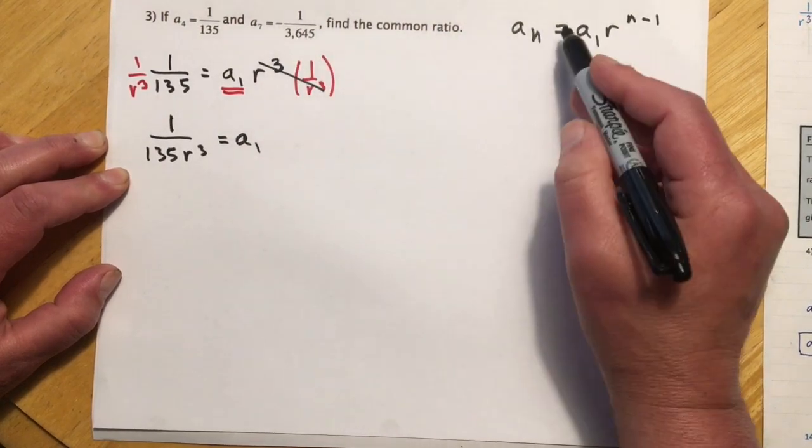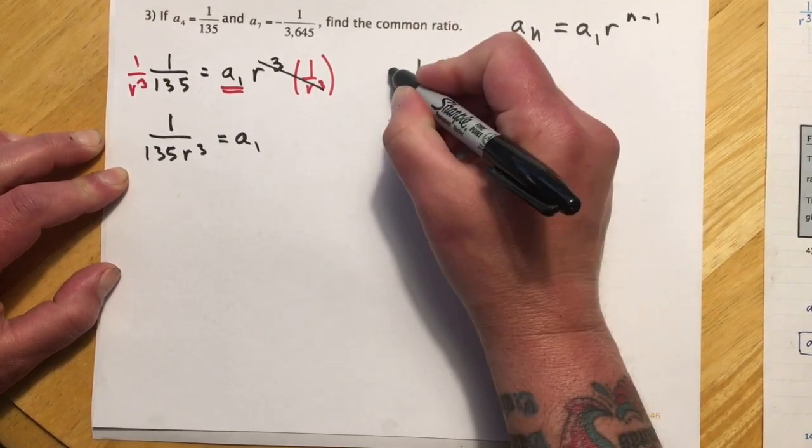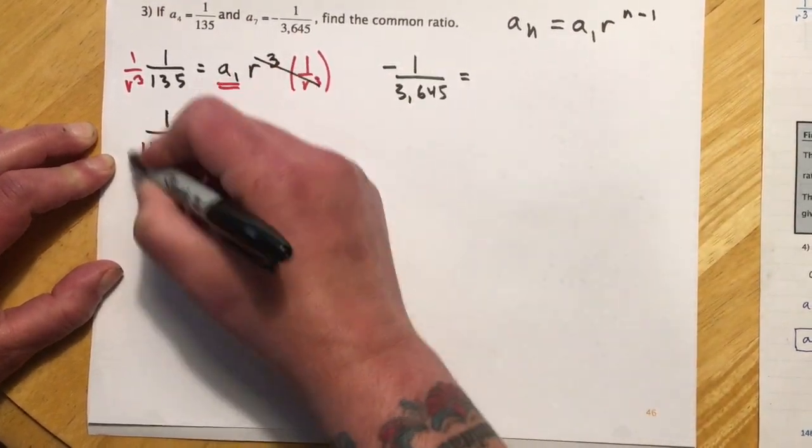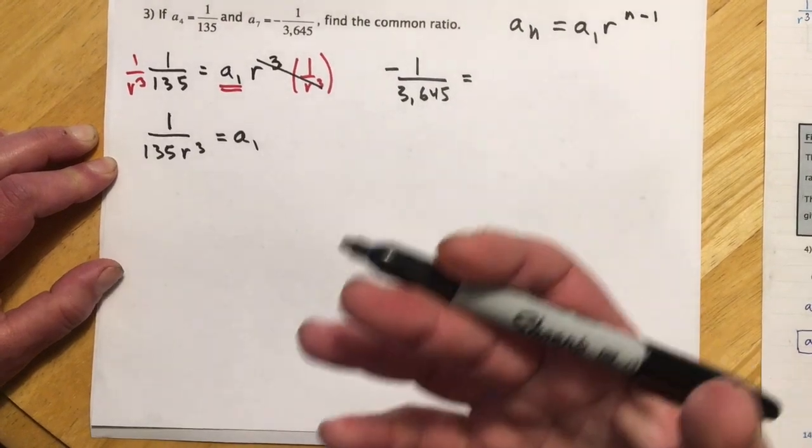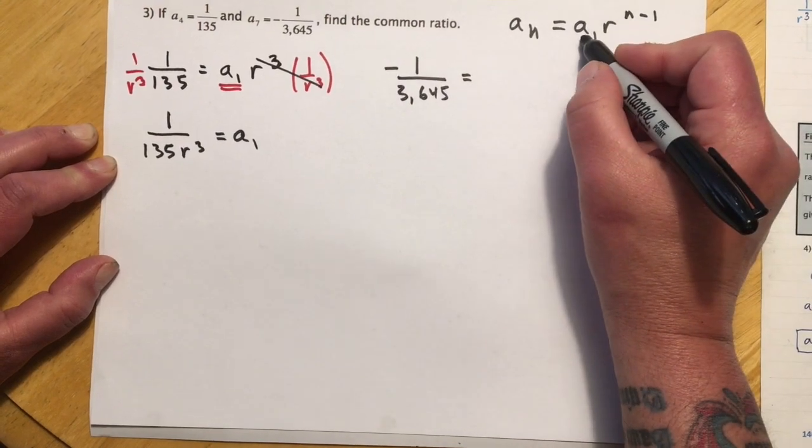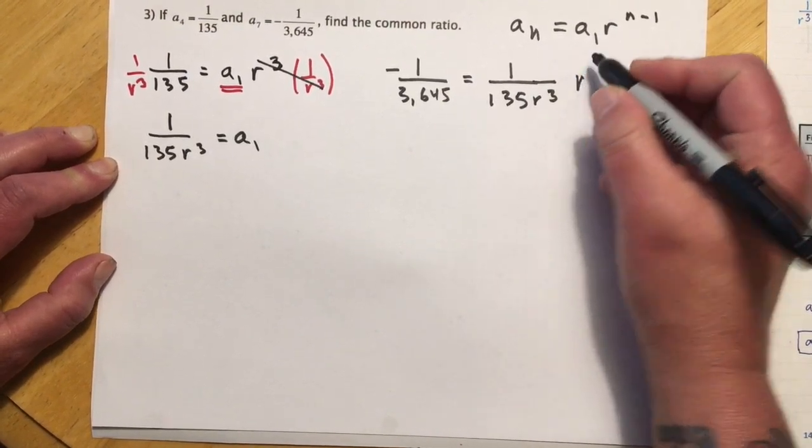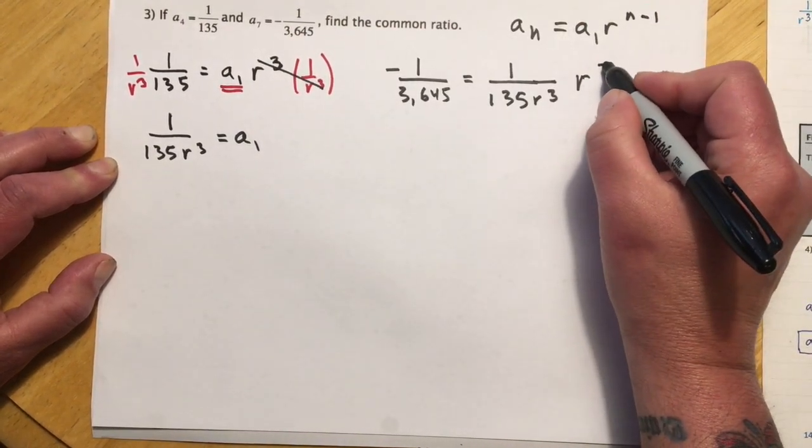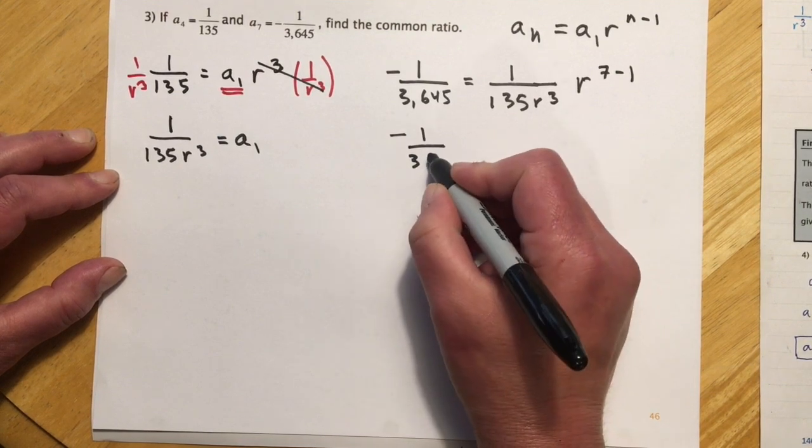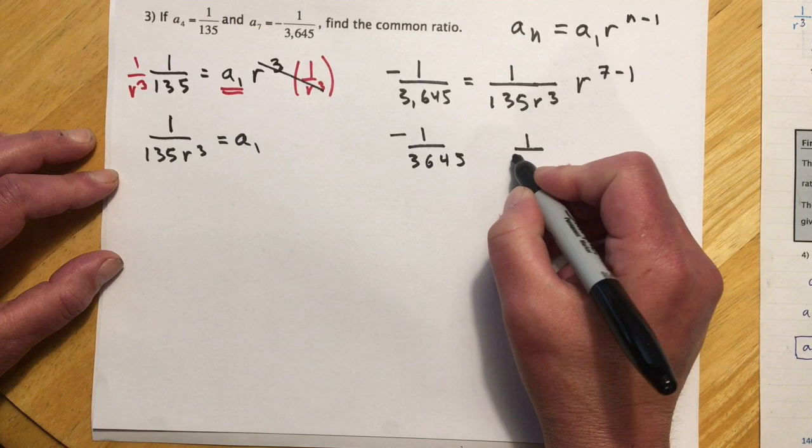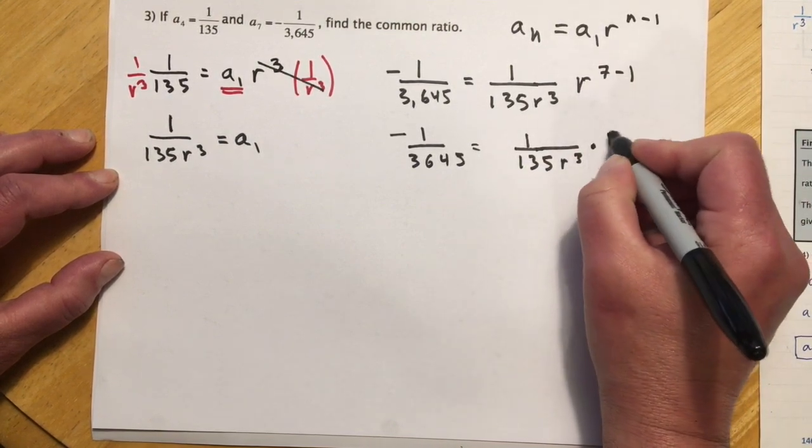So then if I set this second term up the same way, I would have negative 1 over 3645 equals a sub 1. But now I have this expression for a sub 1 that I can put here. Because the trouble back here, right, I have two unknowns. So I need to make two equations and do some sort of substitution to get it down to one equation with one unknown. So I'm going to plug this in for the a sub 1. And then that's going to be r, and then this is the 7th term. So r to the 7 minus 1. So cleaning this up a little bit.